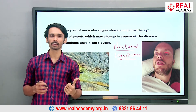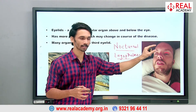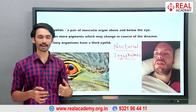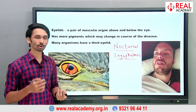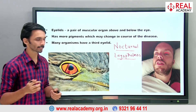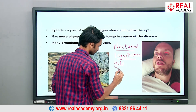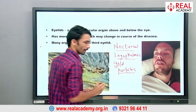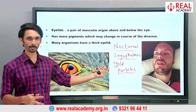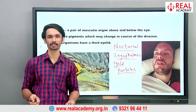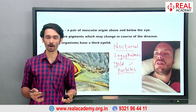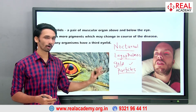In nocturnal lagophthalmos, the eyes are in danger because they are open. If the case gets severe, the doctor performs surgery: the skin of the eyelid is cut and gold particles are inserted inside. The eyelid is then stitched. Gold is a metal with higher density, so the eyelid falls down due to gravity when sleeping, allowing proper closure and sleep. I'd like your answers in the comments: why specifically is gold used here?